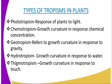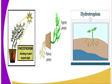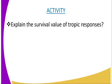We have the survival value of tropic responses. First, phototropism exposes the leaves to a position of maximum light absorption, thereby enhancing photosynthesis. Hydrotropism enables the roots of plants to seek water. Geotropism enables plant roots to grow deep into the soil, offering firm anchorage to the plant. Chemotropism enables the pollen tubes to grow towards the embryo sac, thereby facilitating fertilization. Having said that, the activity is for you to explain the survival value of tropic responses.